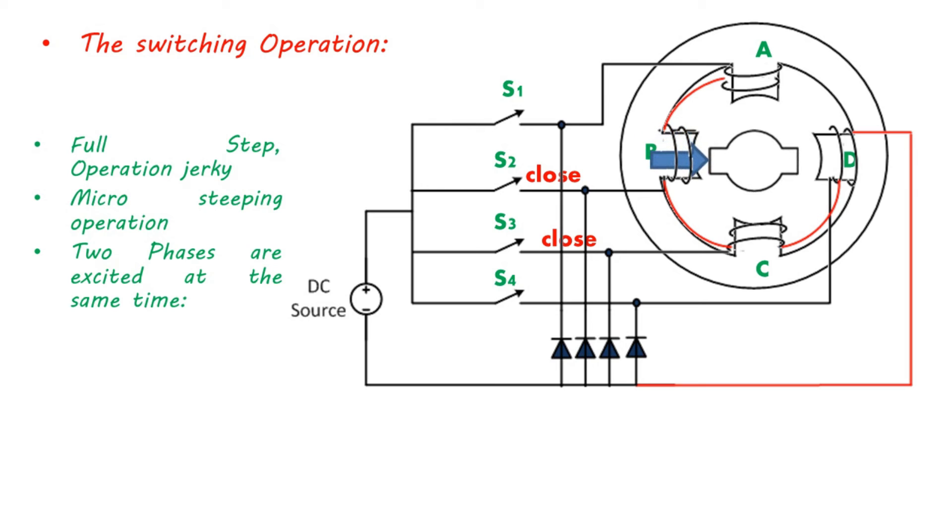After this, we turn on phase C without turning off phase B. This makes rotor travel 45 degrees. Then phase C will remain on and rotor travels another 45 degrees.